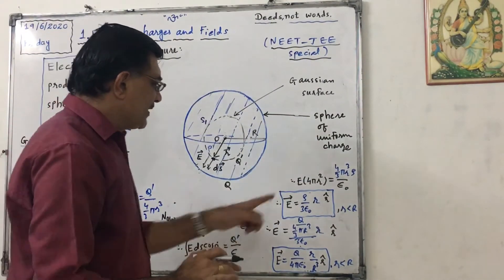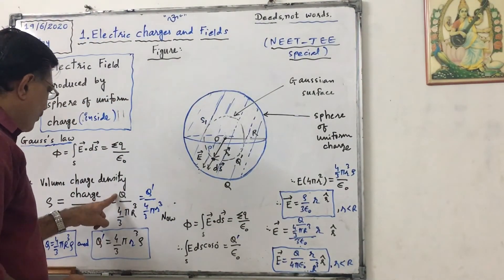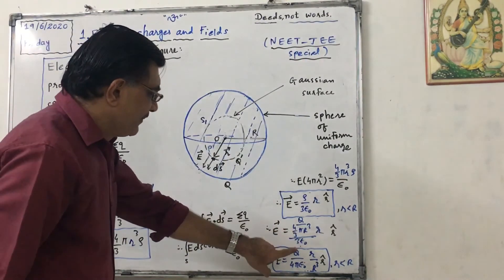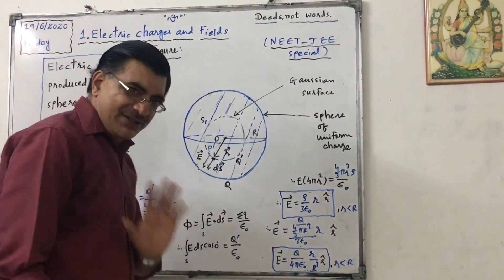If I want to replace rho, we can write like this: Q upon 4 upon 3 pi R cube, in order to obtain equation in terms of total charge.